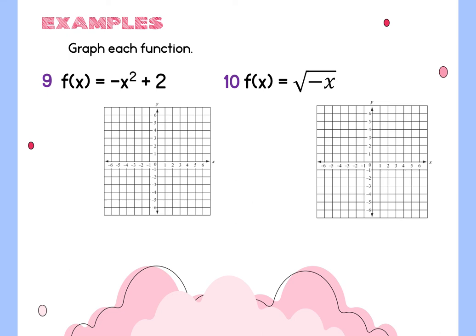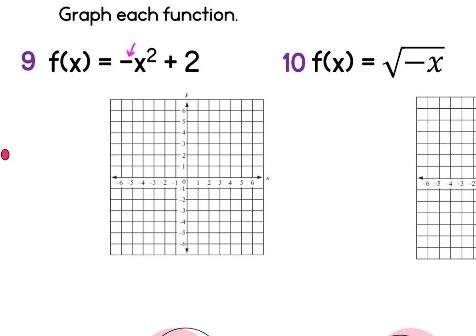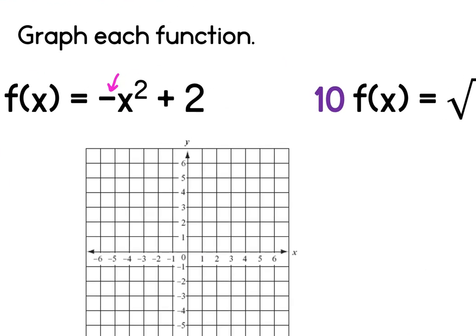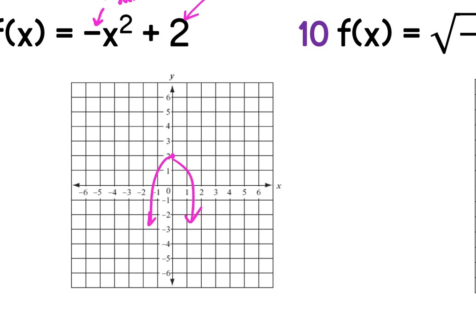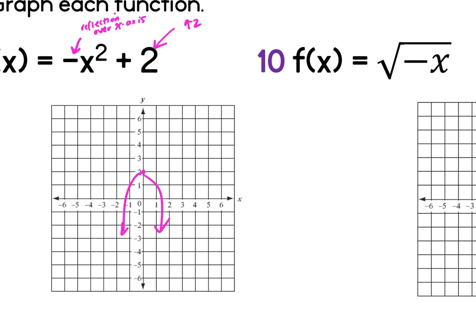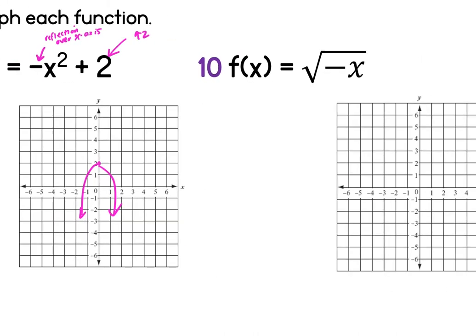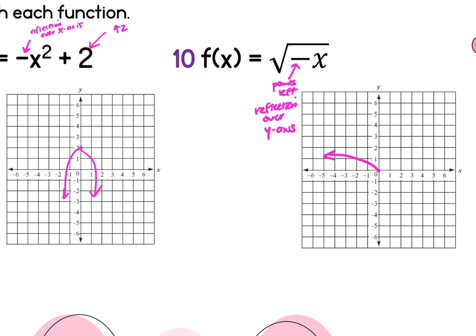Example 9: the negative on the front causes a reflection over the x-axis — flip upside down. The plus 2 shifts it up 2. So go up 2 and point the curve downward. Example 10: for the square root, the negative is inside, so instead of flipping upside down, it points the curve to the left — a reflection over the y-axis. Starting from zero, zero, point it to the left.